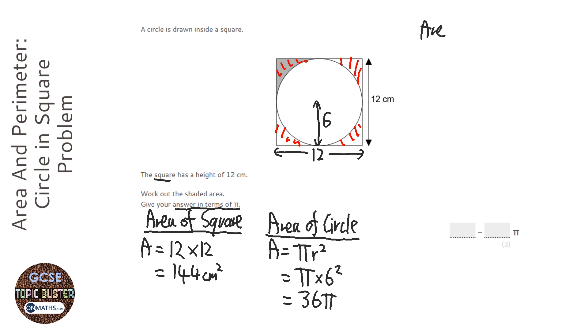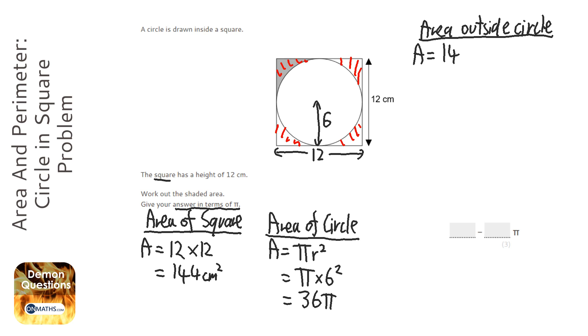Area outside circle. I'm trying to show the examiner that I'm working out the area that I've shaded in red. So the area of that is the area of the square, which is 144, take away the area of the circle, which is 36π.